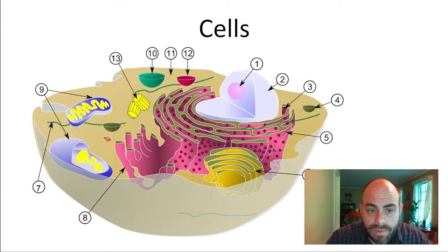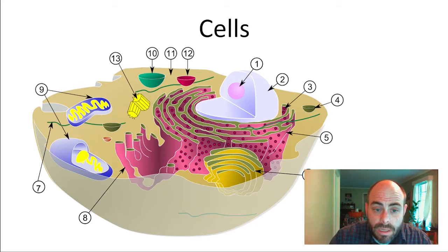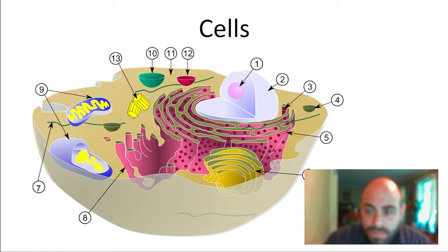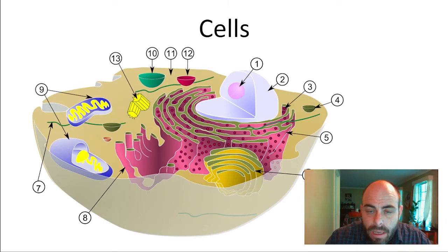First one is cells. All living things are composed of cells. A cell is the basic unit of life, the basic unit of structure and function. We're going to have a whole unit on cells coming up. You just need to know that all living things are composed of cells, and a cell is the basic unit of life.